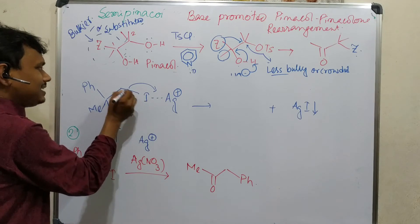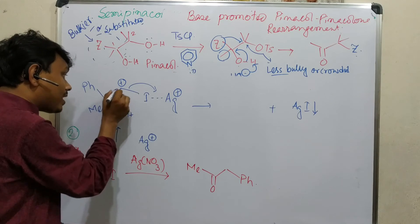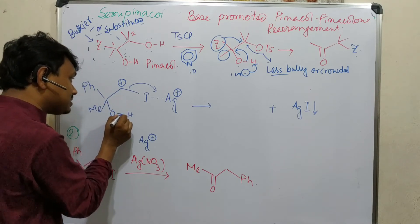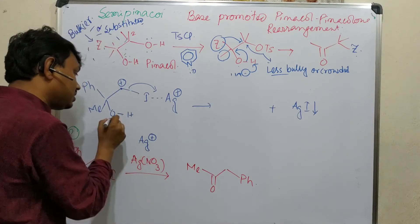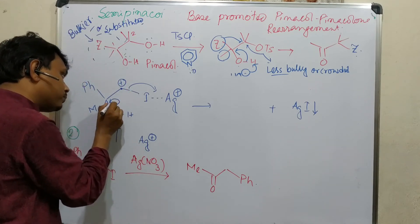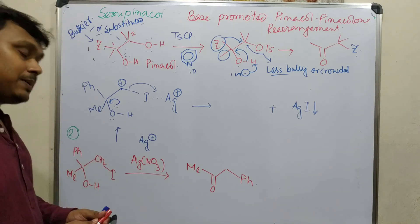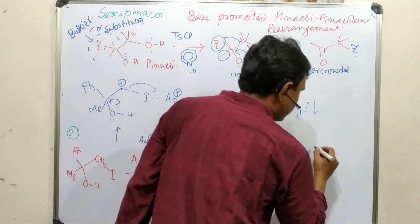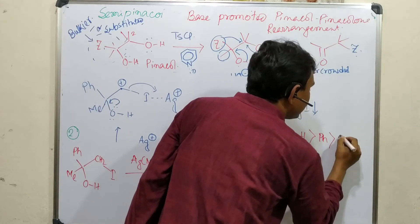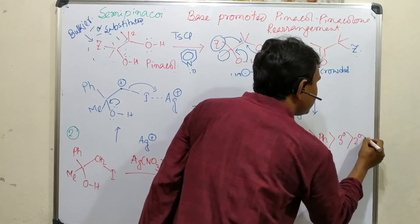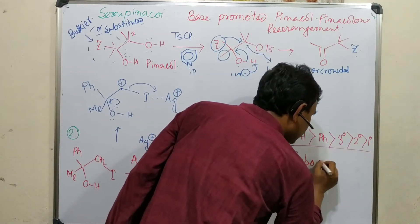So what will be the product here? One is silver iodide which precipitates out from the reaction mixture. If iodine leaves, there will be carbocation generation like pinacol-pinacolone, and see the similarity - hydroxyl is there and neighboring group, this carbon has a positive charge. So oxygen will push. Now the question is which group will migrate, phenyl versus methyl. As I have explained in previous video, the migratory aptitude is hydride greater than phenyl greater than tertiary greater than secondary greater than primary, and the transition state is carbocationic.